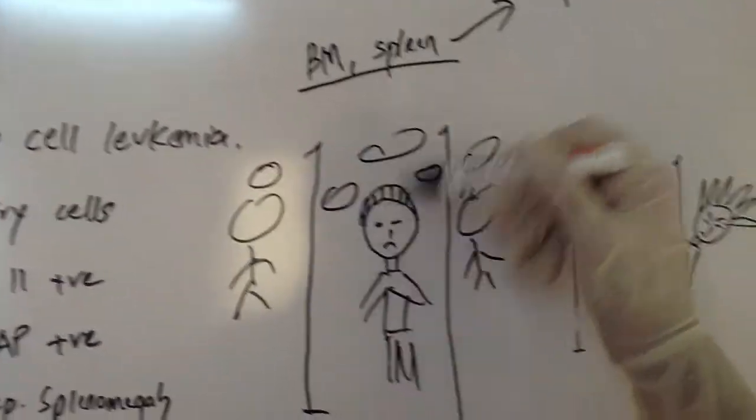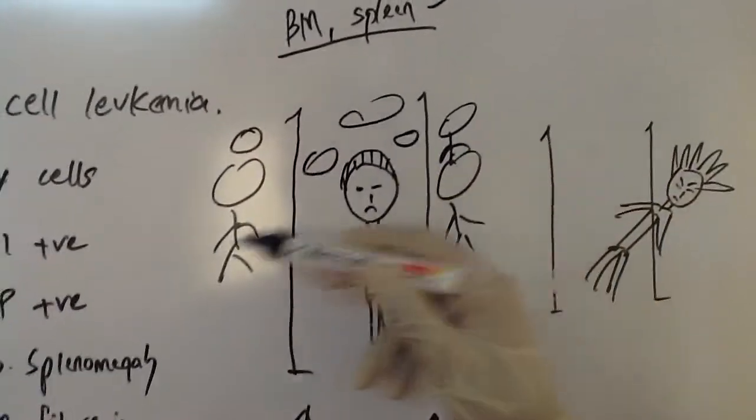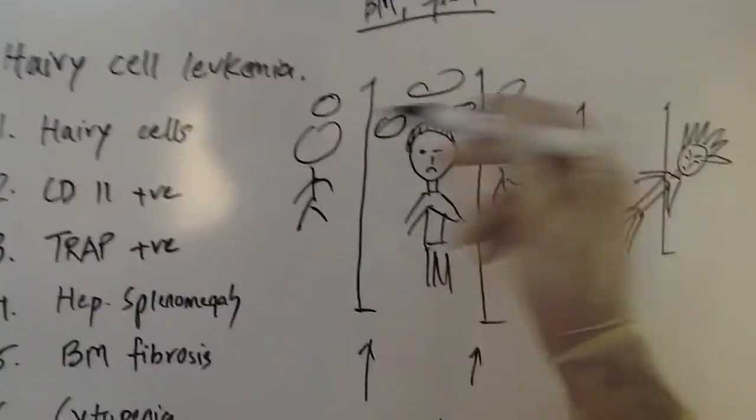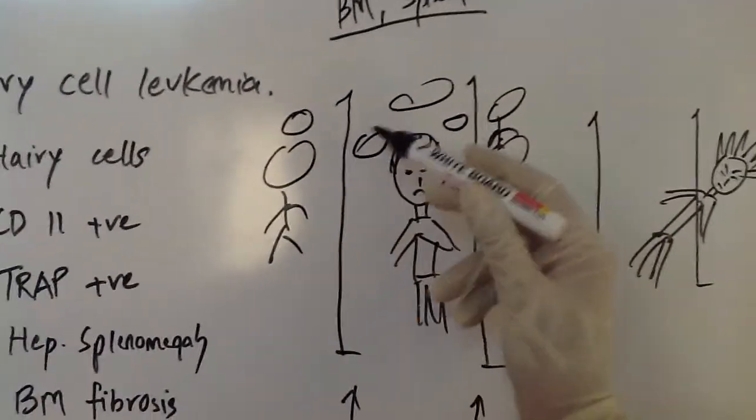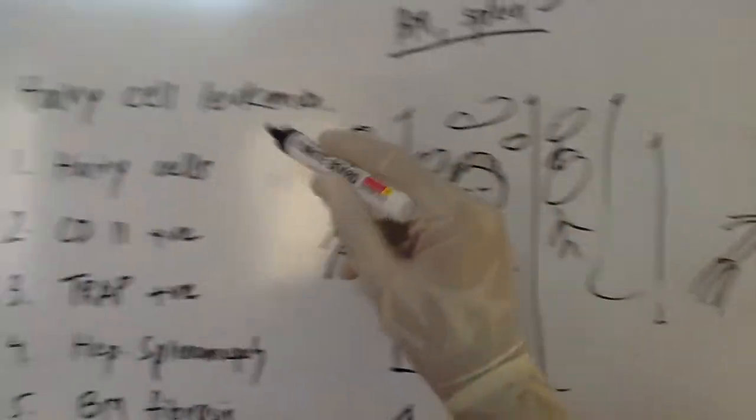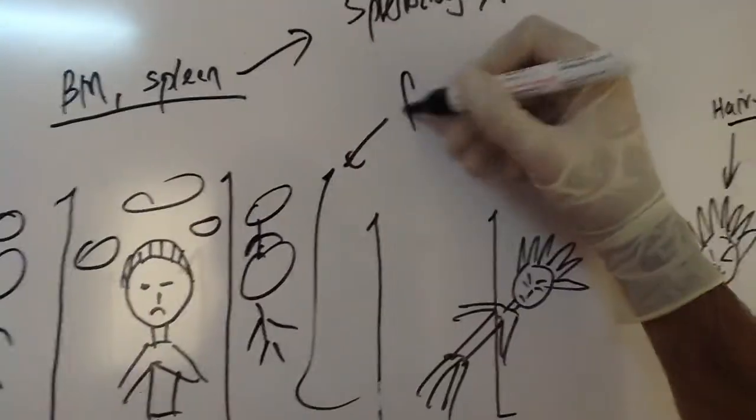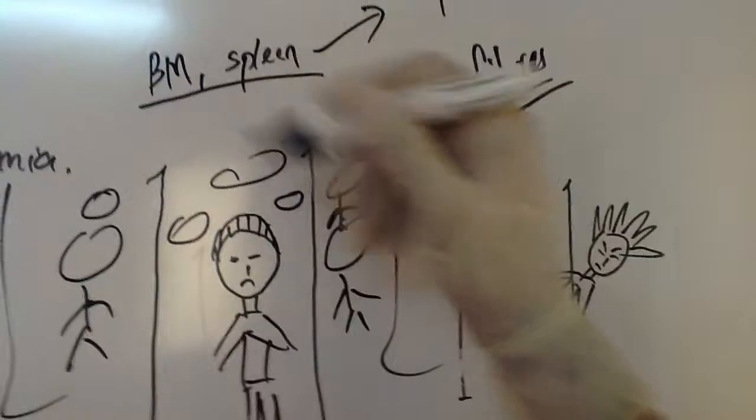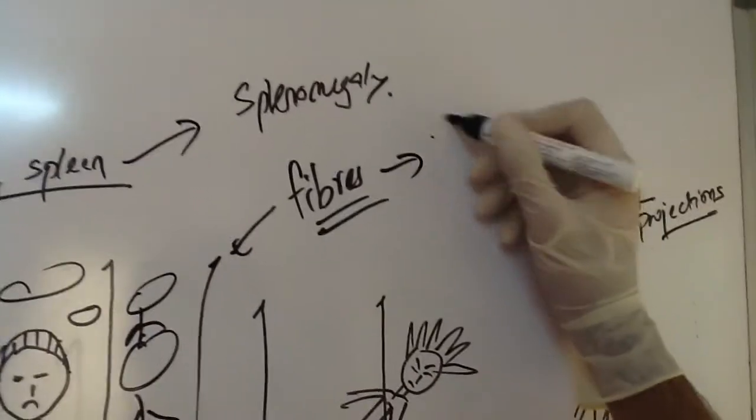And inside the bone marrow, there are lots of these vertical bars which are imprisoning or which are trapping all these lymphocytes inside. So these vertical bars, you can imagine them to be fibers. Actually, they are the fibers. And these fibers are the vertical bars, and so you have fibrosis.